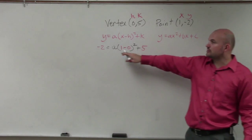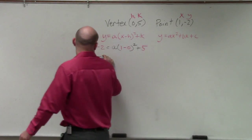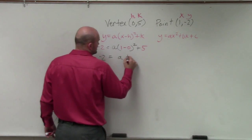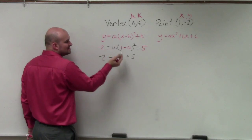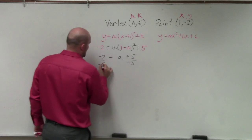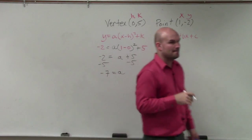So now, the only thing we don't know is a. So we can simplify the problem to find a. So negative 2 equals a plus 5, because 1 minus 0 is 1, 1 squared is 1, 1 times a is a. Then to solve for a, negative 7 equals a. Cool.